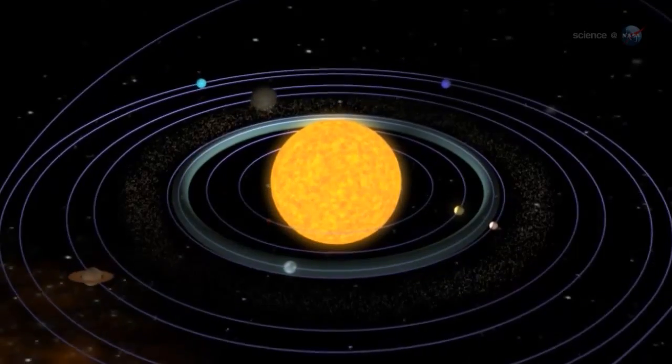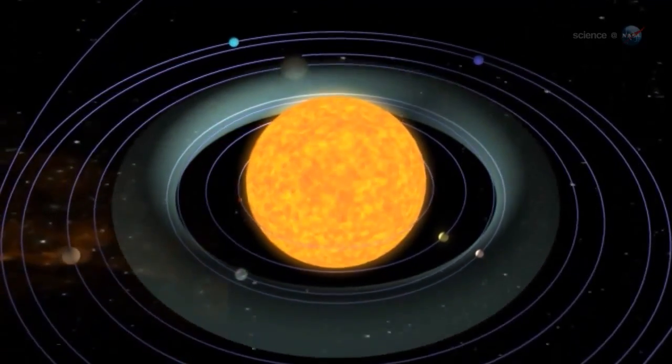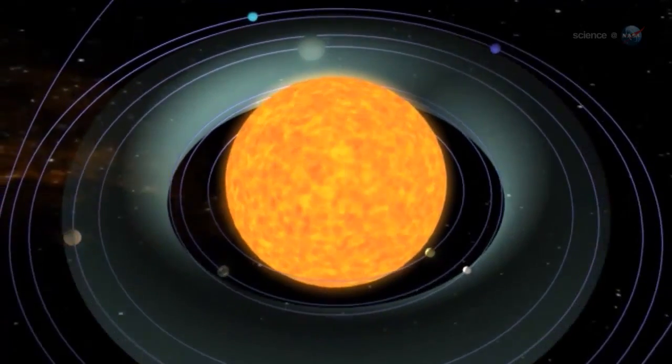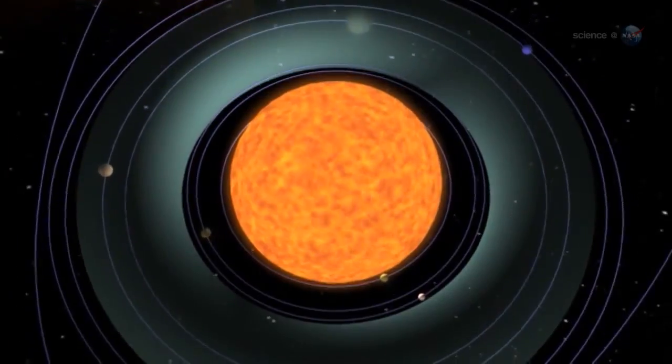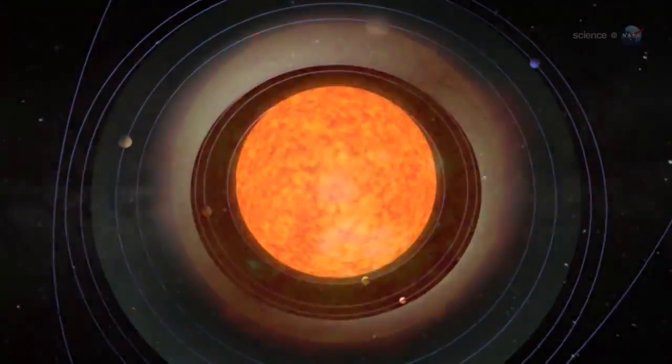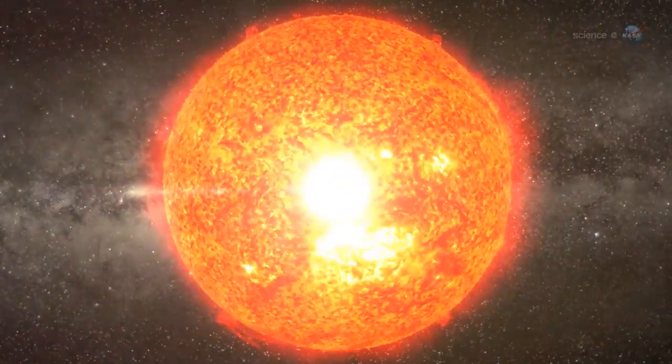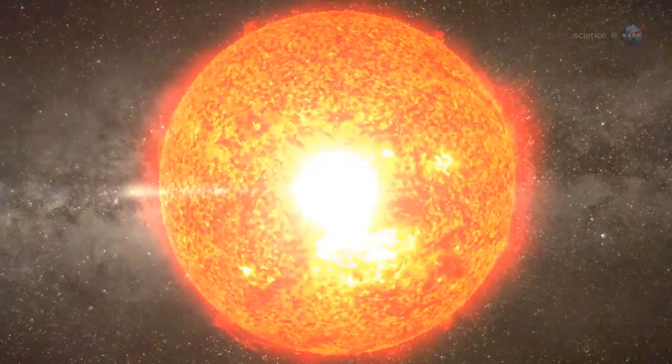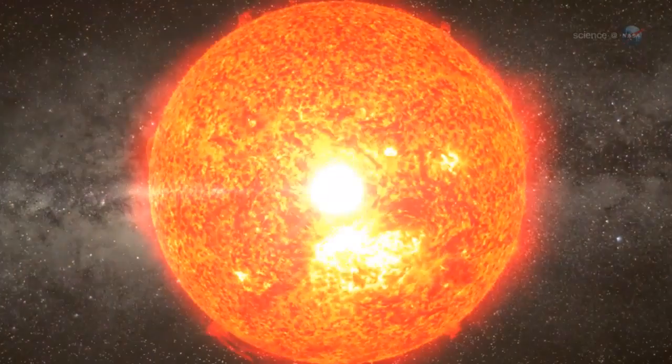Researchers who specialize in stellar evolution have long known that the inner planets are in danger. The trouble starts in the distant future when the Sun's core runs out of hydrogen fuel for nuclear fusion. To keep the fires burning, the Sun will begin to fuse hydrogen outside the core in a layer closer to the stellar surface. This will turn the Sun into a red giant at least 200 times wider than it is today.